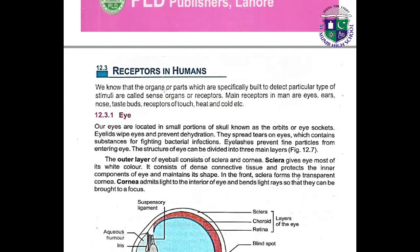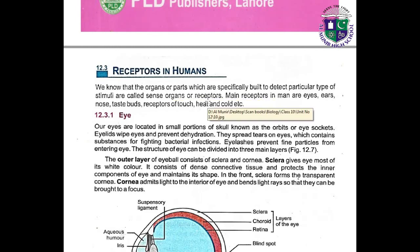A question is: what are receptors? The organs or parts which are specifically built to detect a particular type of stimuli are called sense organs or receptors. These are organs which are specifically organized so that a particular type of stimuli can be detected.